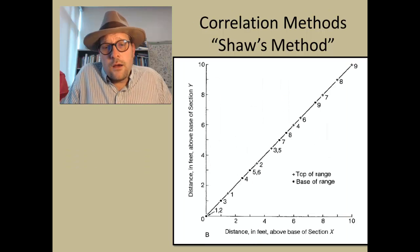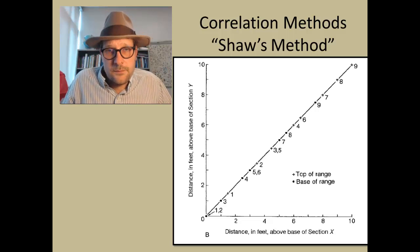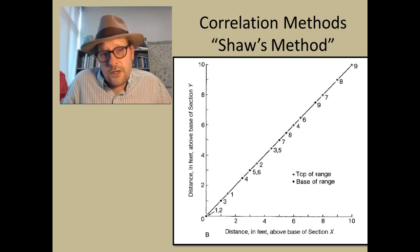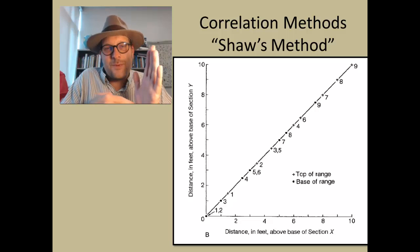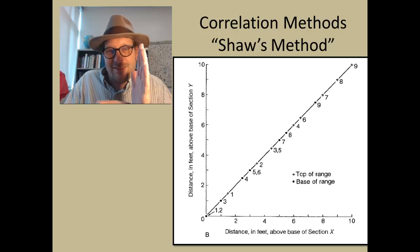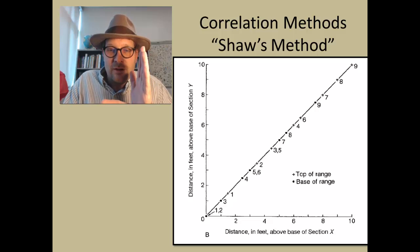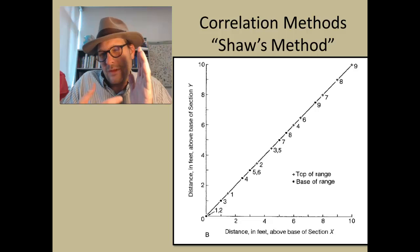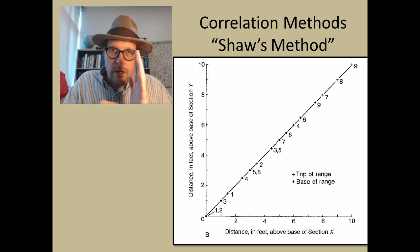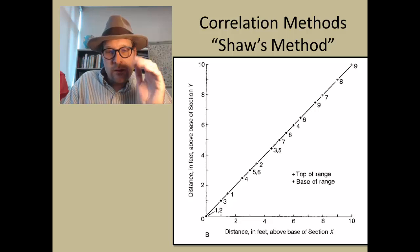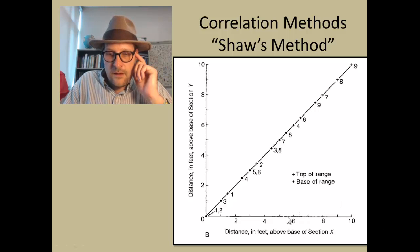Most of the time when you compare these sections with pretty good overlap, you will get a straight line when you graph them. We graph section X on one axis and section Y on the other, then plot the distance in each section where we get the first appearance of each shared species. You get the base and top of the range — equivalent to the FAD and LAD — and you will see a straight line. This means you can take a rock at six feet up in section X, go across, and see where it corresponds in section Y.